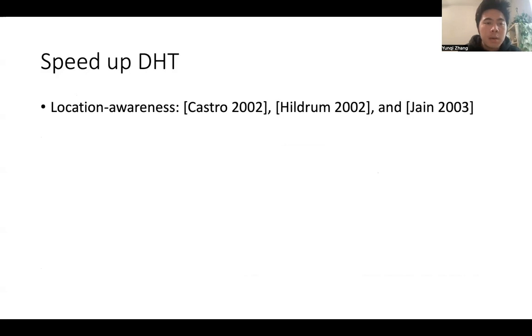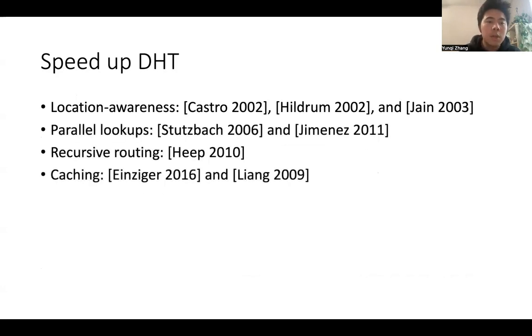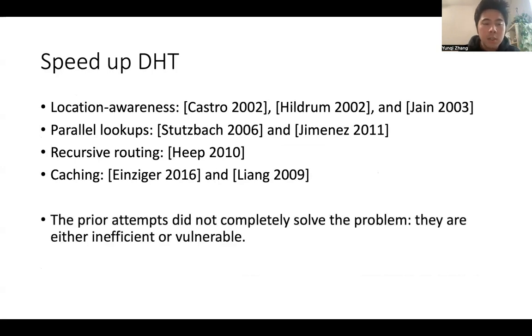There are many prior attempts at speeding up DHTs, and they came from multiple perspectives, including location awareness, parallel lookups, recursive routing, and using cache. However, these attempts did not completely solve the problem. Some of them are inefficient. Some of them are vulnerable to attacks.